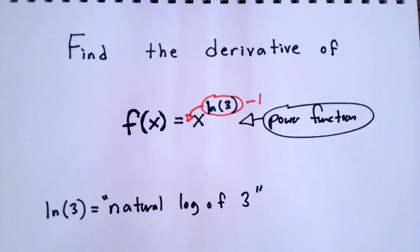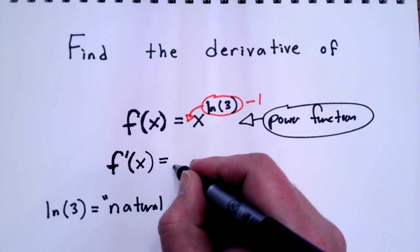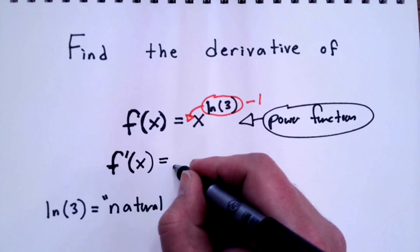There's no need to touch your calculator here or approximate at all. We can just rewrite this as f prime of x is equal to natural log of 3 times x to the natural log of 3 minus 1. Now I'm using cursives for my natural logs of 3s.